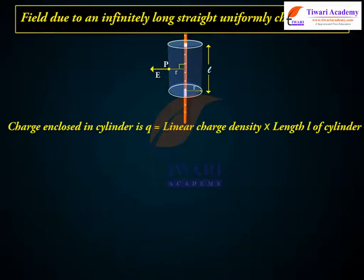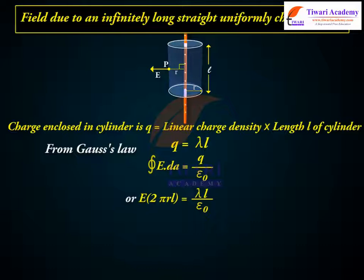Charge enclosed in cylinder is Q equals linear charge density into length L of cylinder, or Q equals lambda L. From Gauss's Law, closed contour E dA equals Q by epsilon naught, or E times 2 pi R L equals lambda L by epsilon naught, E equals lambda by 2 pi R epsilon naught.